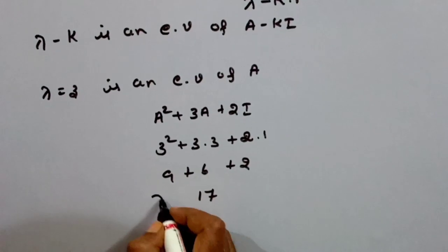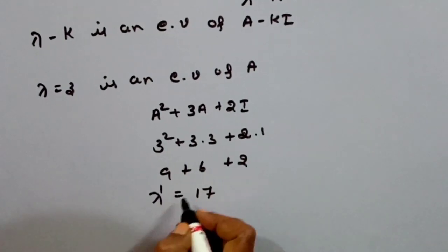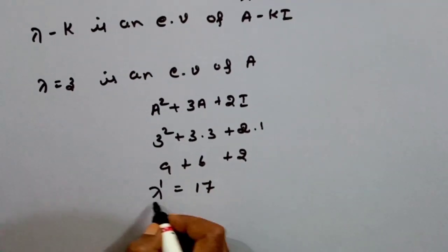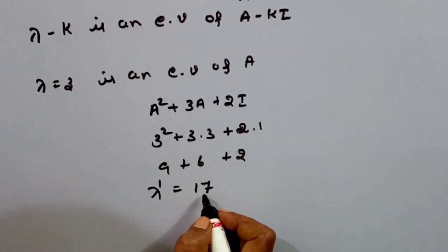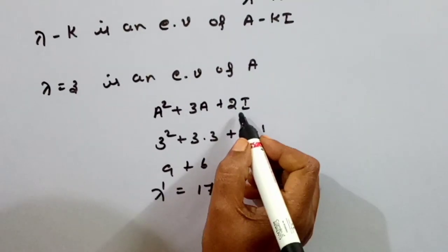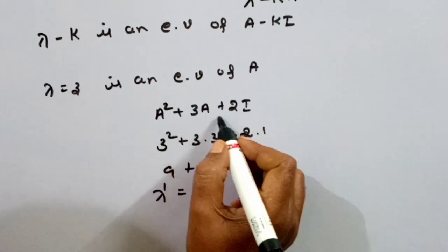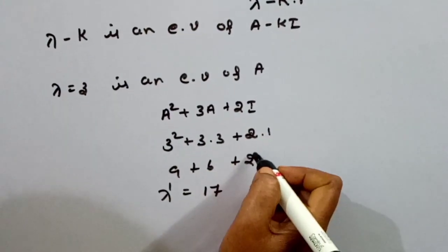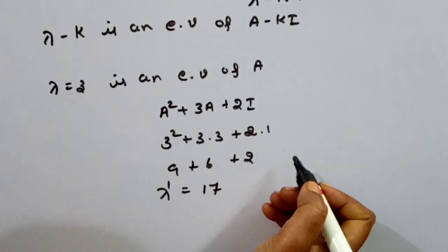If we have a lambda prime, the result is 17. So 17 is an eigenvalue of the given polynomial A squared plus 3A plus 2I. This makes the problem easier to solve.